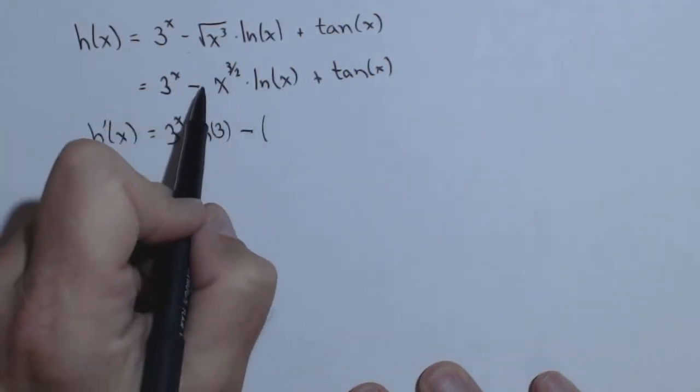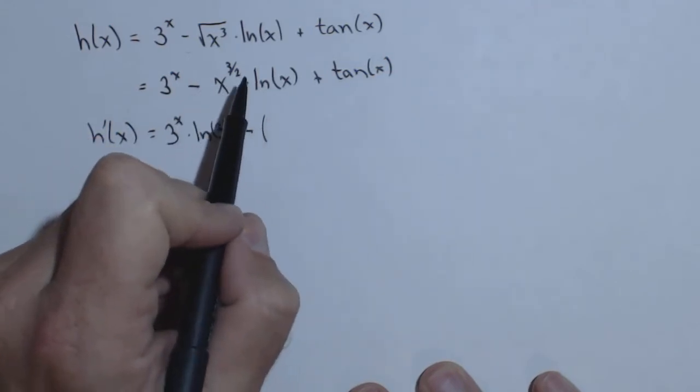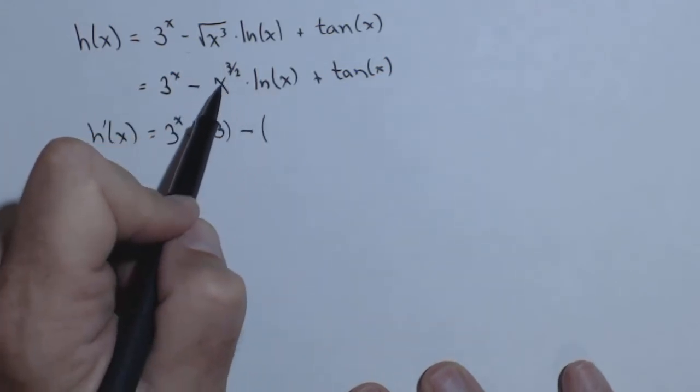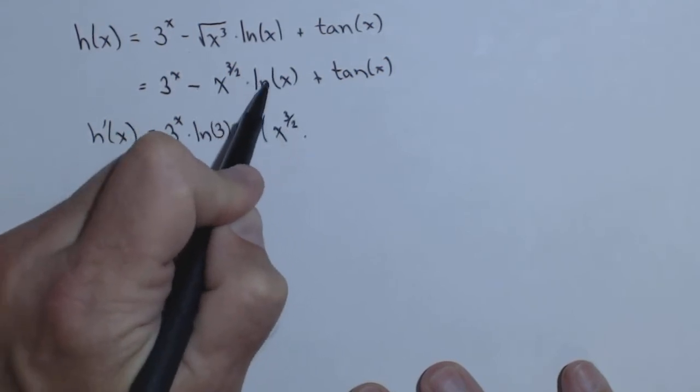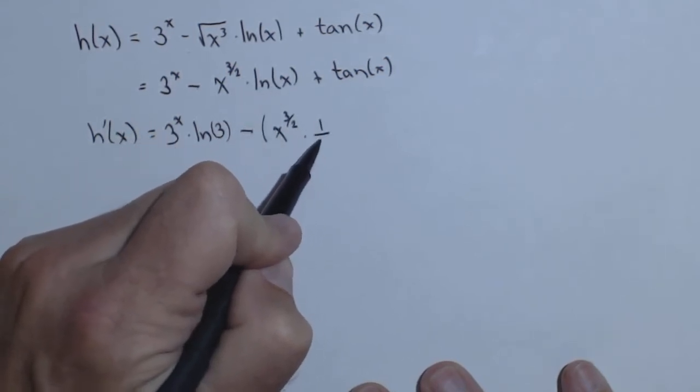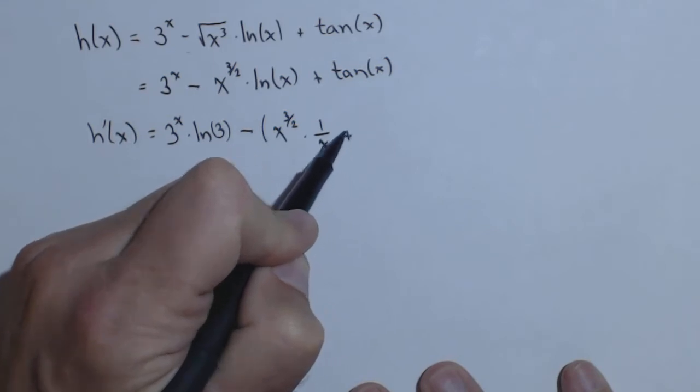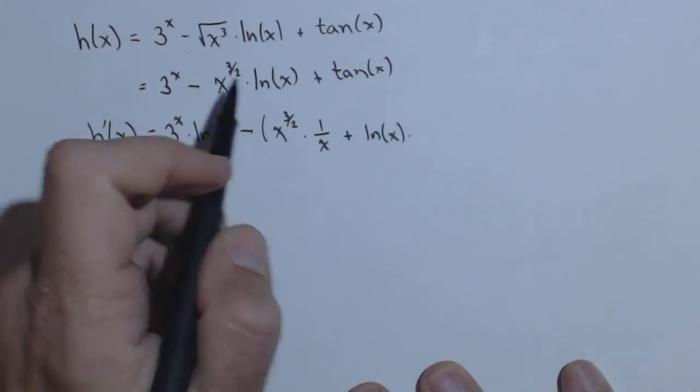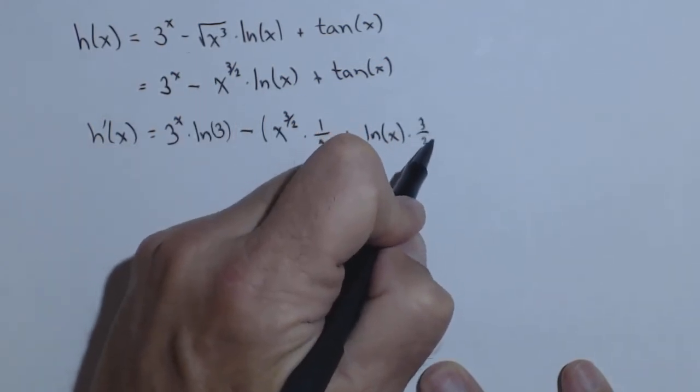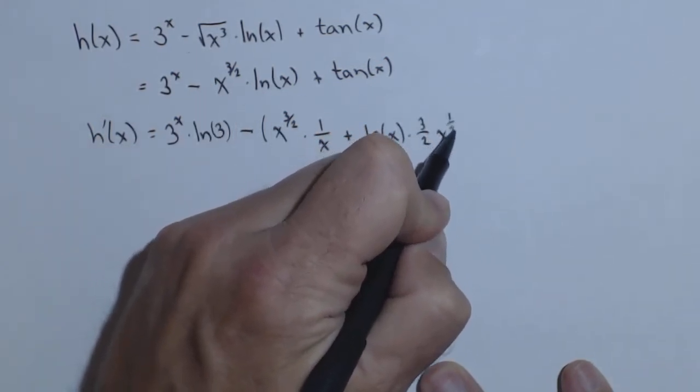Minus - and I'm going to use parentheses because this negative has to distribute to the whole product rule. Leave x^(3/2) alone times the derivative of ln(x), which is 1/x, plus leave ln(x) alone times the derivative of x^(3/2), which is (3/2)x^(1/2).